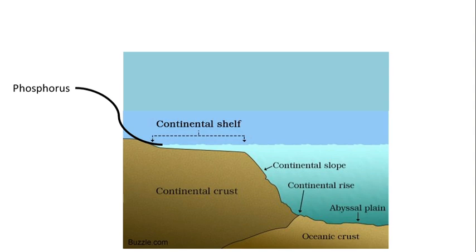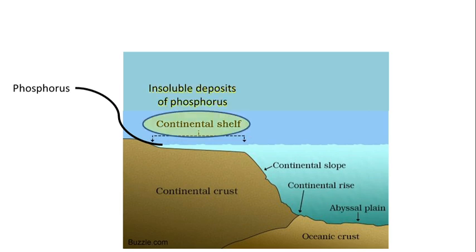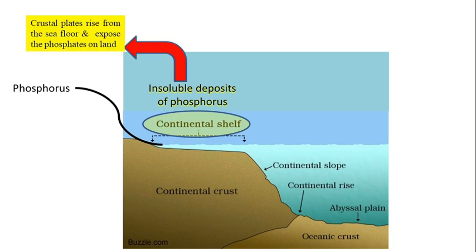Large amounts of phosphorus may get washed away with rain and join the ocean floor. The first rock layer of the ocean is known as the continental shelf, where phosphorus may accumulate. The insoluble deposits of phosphorus in the continental shelf may get exposed after millions of years when a crustal plate rises up, exposing phosphates and phosphorus content back to the land.